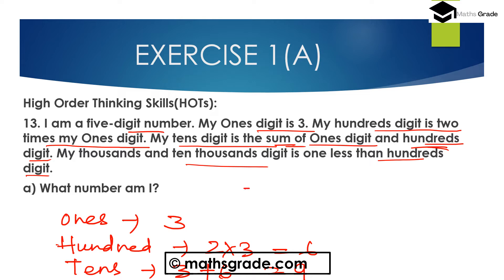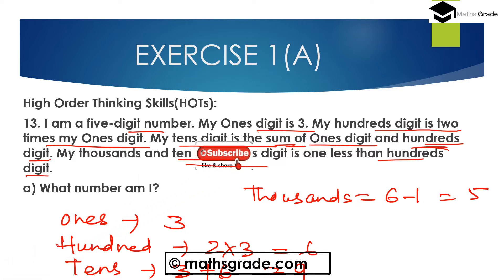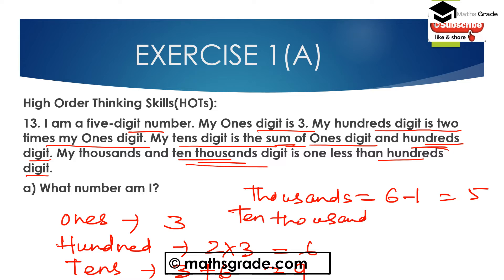My 1,000's and 10,000's digit is 1 less than the 100's digit. The 100's digit is 6, so 6 minus 1 equals 5. Therefore both the 1,000's digit and the 10,000's digit are 5.